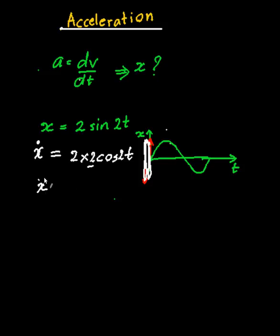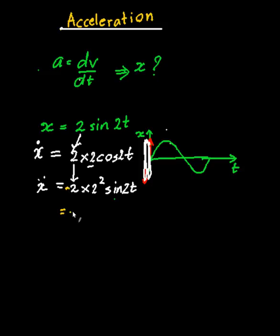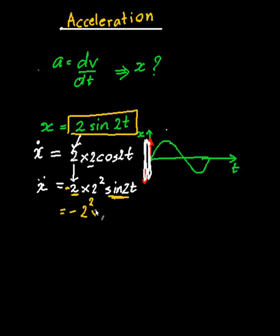Then ẍ (x double-dot): the 2 came from before and the 2 comes down again, so it's going to be 2 times 2 squared times minus sin(2t). Basically what we have is minus 2 squared times 2sin(2t) — but 2sin(2t) is the same as x. So ẍ equals minus 2² times x. My acceleration can actually be written as a function of displacement x.